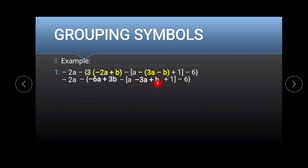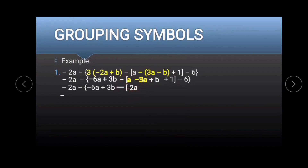We are now going to eliminate the bracket. We work on a minus 3a plus b plus 1. We can combine the like terms a and negative 3a. Combining a minus 3a gives us negative 2a, then copy plus b plus 1 minus 6.